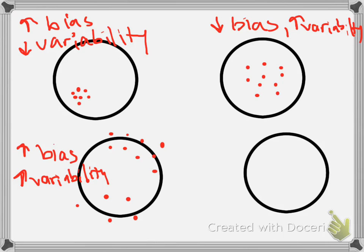What we're looking for, though, is to have both low bias and low variability. So that would be a situation where all of our points from our sampling distribution were clustered pretty close to the mean. This would be the ideal.